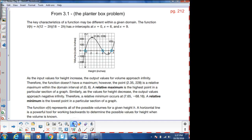We started on Wednesday with the planter box problem, and on Wednesday we graphed the planter box problem, and we got zeros at (0,0), (6,0), and (9,0).